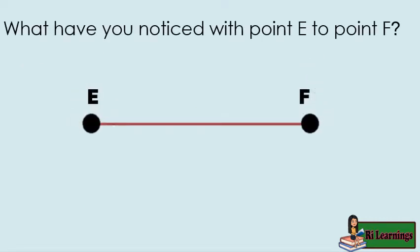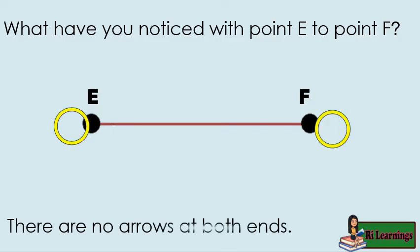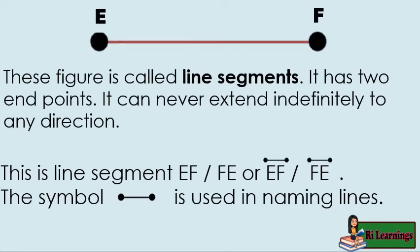What have you noticed with point E to point F? There are no arrows at both ends. This figure is called a line segment. It has two endpoints. It can never extend indefinitely in any direction. This is line segment EF or line segment FE. It can also be written as capital EF or FE with a line segment symbol on top. This symbol is used in naming line segments.